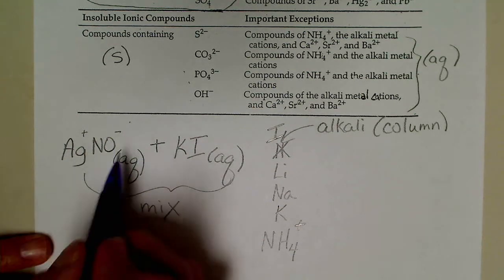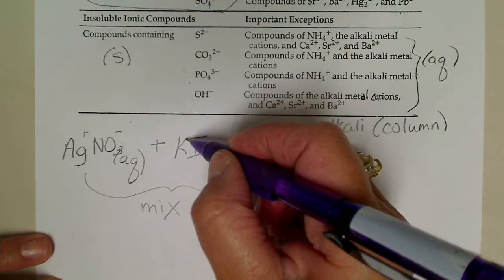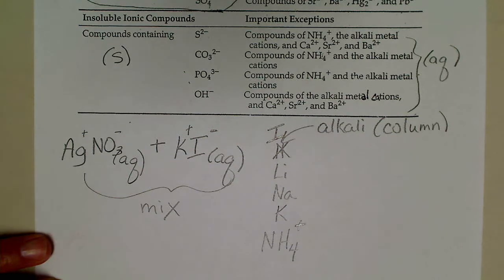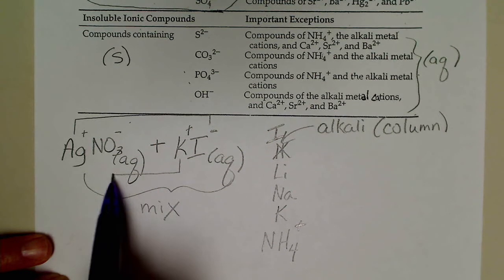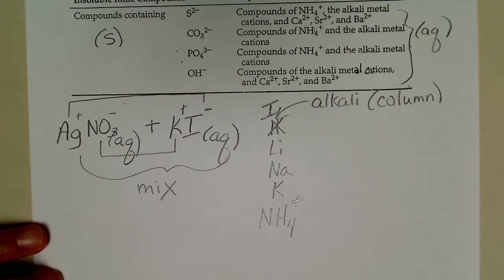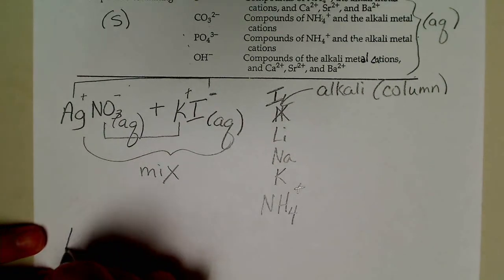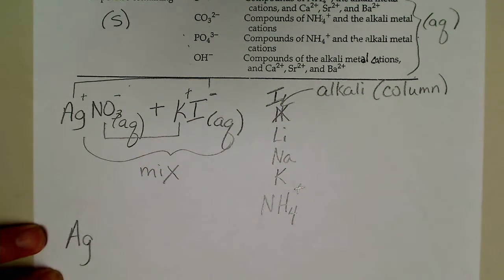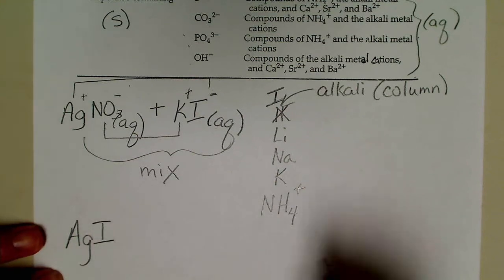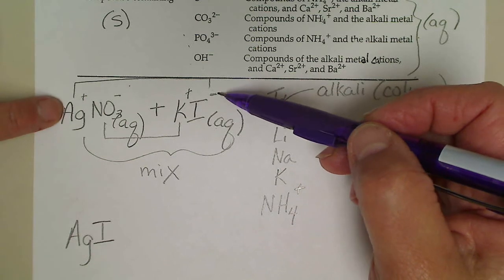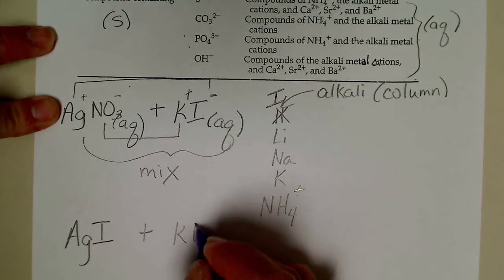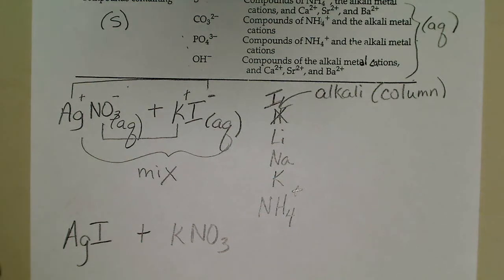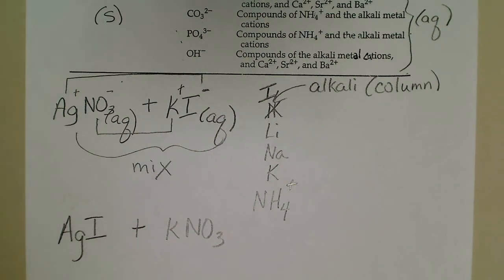So this is silver in the plus one state, nitrate - I forgot the three - nitrate's a minus one, potassium ion is a plus one, the iodide ion is also a minus one. So this is a type of double replacement reaction where the metal would switch places with the other metal. So if we mix these together, we would see the formation of a solid. We could just do a switch partners there. Ag can get together with I - the ratio is going to be one to one because the charges would cancel to zero - and then potassium would get together with nitrate.